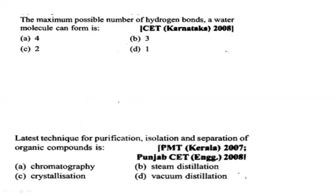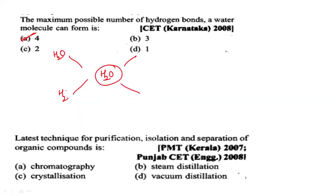Next question: the maximum number of hydrogen bonds a water molecule can form is 4. One water molecule can form hydrogen bonds with four other water molecules — two through its hydrogen atoms and two through its lone pairs — so the answer is 4.